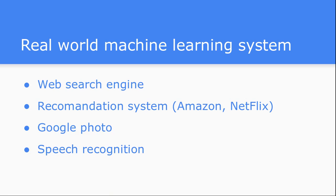Let's see how real-world big corporate companies are using machine learning. First is the web search engine — in Google Search or Bing Search, the top 10 links that come up when you search any keyword are modeled with the help of machine learning. There is also a recommendation system on Amazon for product recommendations, or Netflix movie and TV series recommendations — these all happen through machine learning systems.